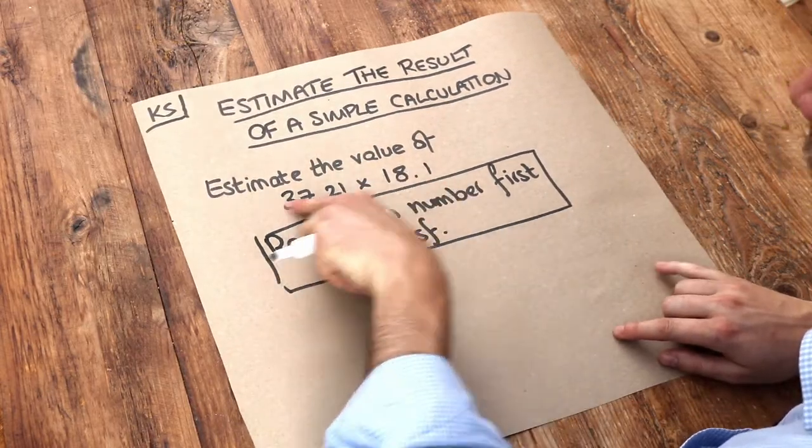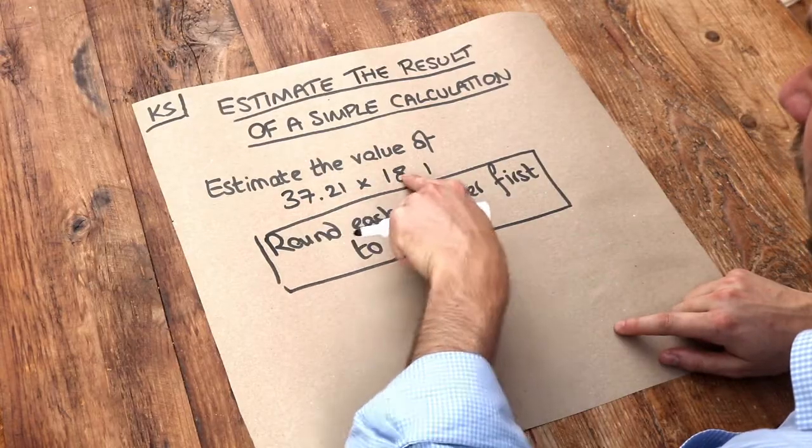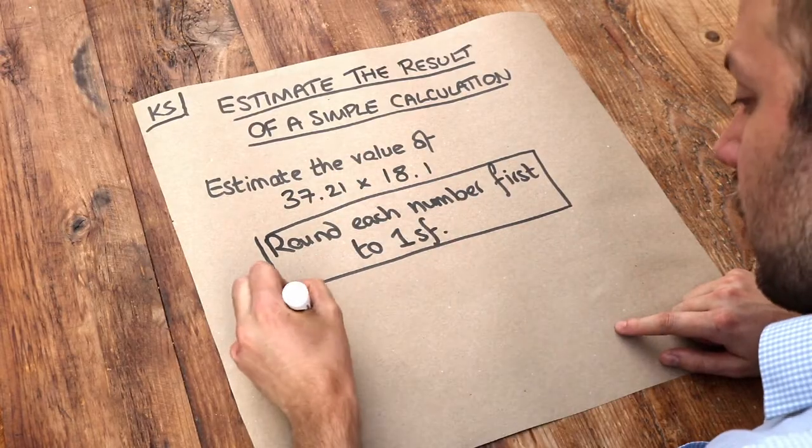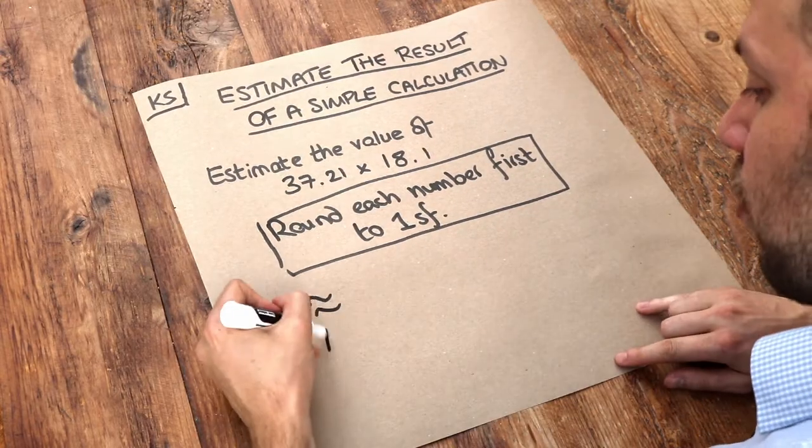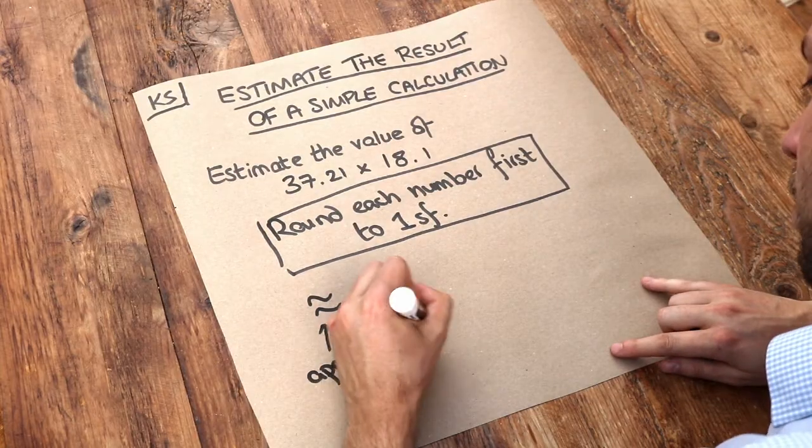So if we want to take this calculation, we round each of these numbers to one significant figure. Now this symbol here means approximately equal to. You don't have to use it.